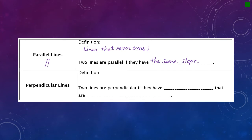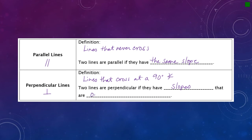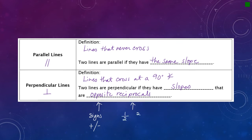Perpendicular lines are lines that cross at a 90-degree angle, also called a right angle. The symbol for perpendicular looks like an upside-down T. Two lines are perpendicular if they have slopes that are opposite reciprocals. Opposite means opposite signs — if one is positive, the other must be negative. Reciprocal means you flip a fraction upside down, so if one fraction is one over two, the reciprocal is two over one.